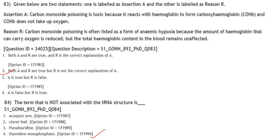Assertion A: Carbon monoxide poisoning is toxic because CO reacts with hemoglobin to form carboxyhemoglobin, which cannot carry oxygen — correct. Reason R: CO poisoning is listed as a form of anemic hypoxia because the oxygen-carrying hemoglobin is reduced, but total hemoglobin content remains unaffected — also correct, but R is not the correct explanation of A. Both A and R are true but R is not the correct explanation of A. Answer is option 2.